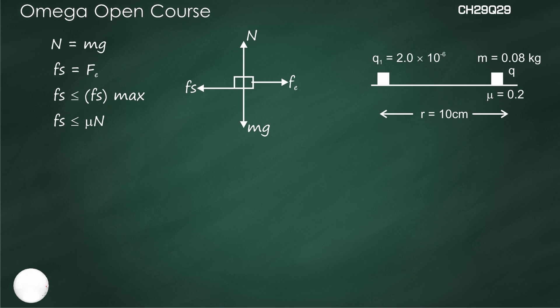Putting in the values, we get KQ₁Q/R² ≤ μmg, which gives us Q ≤ μmgR²/(KQ₁).